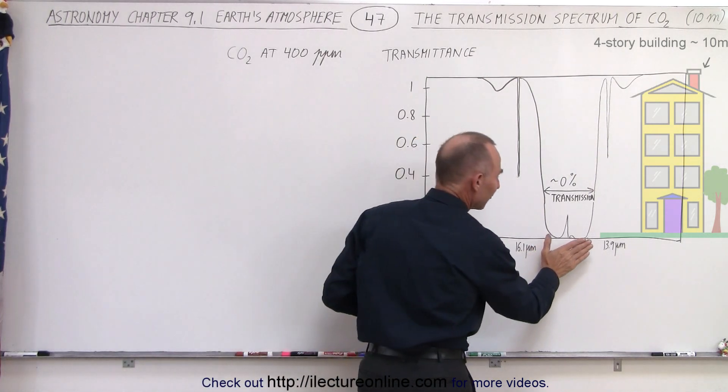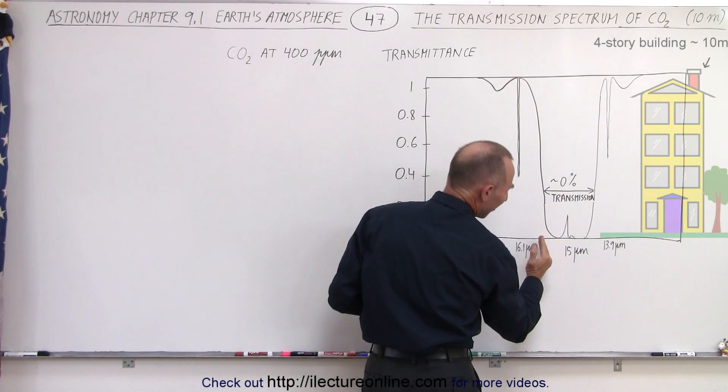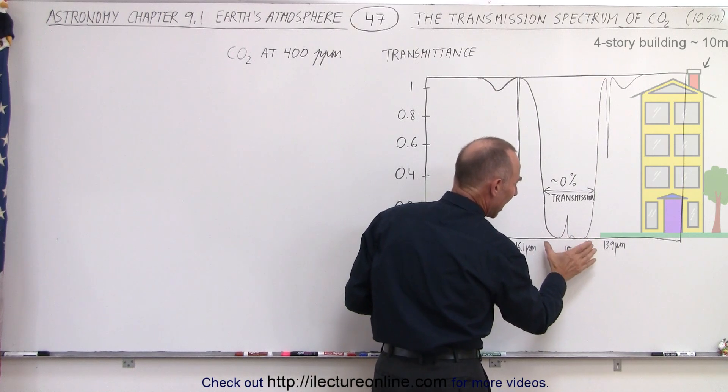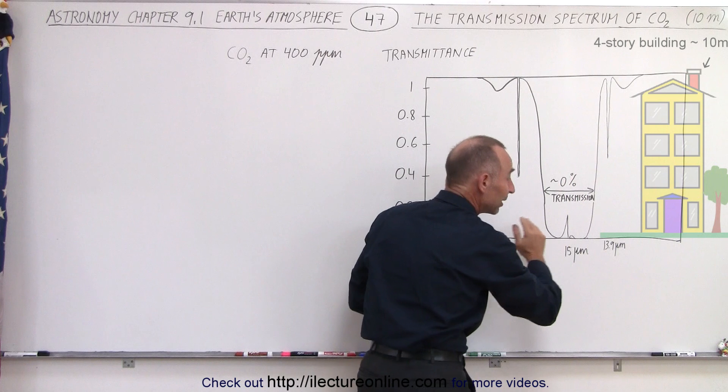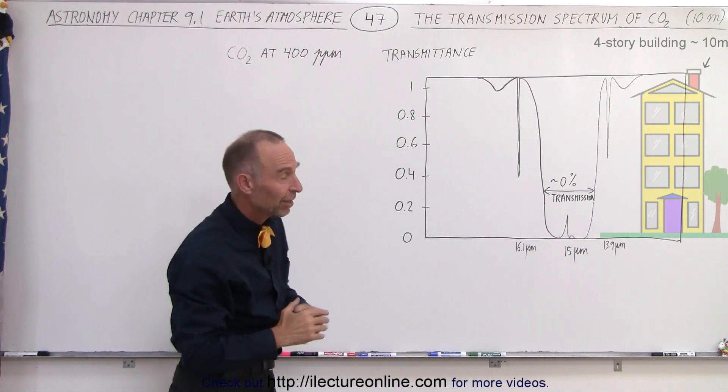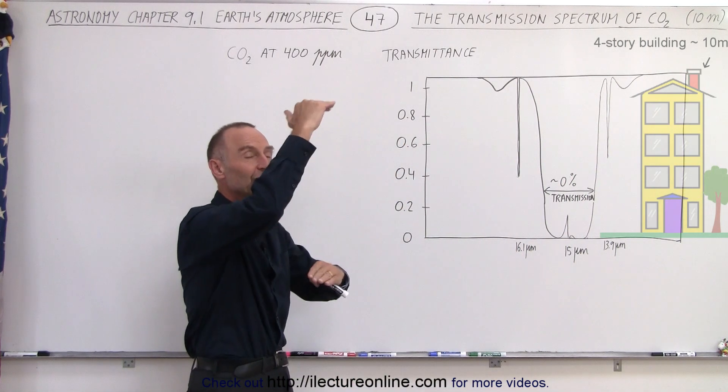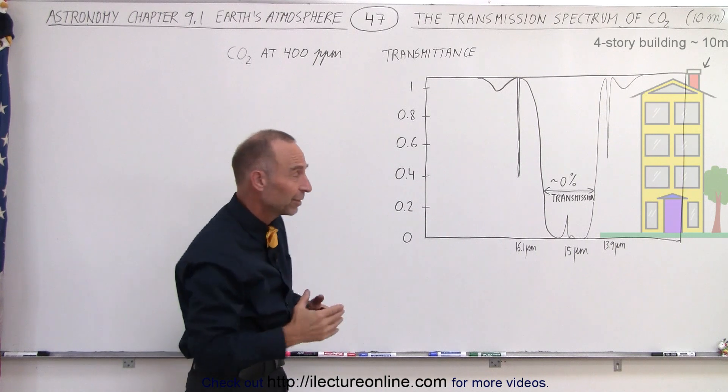We can see that the vast majority between about 15 and a half and 14 and a half micrometers, and widening as we go over here, but the vast majority of that simply doesn't make it all the way up to 10 meters. It is absorbed before it reaches a height of 10 meters or 33 feet above the surface.